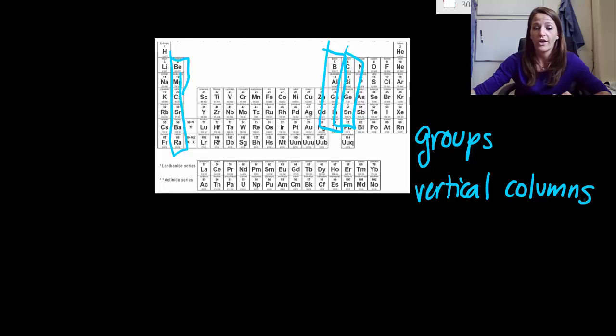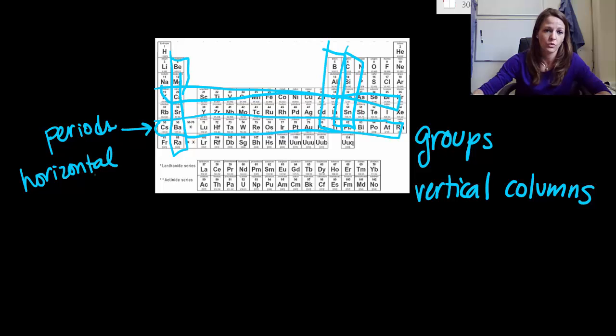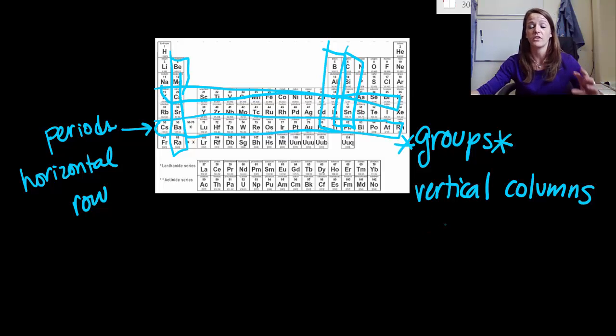Now, we also sometimes talk about a row. So a horizontal row, I cannot draw a straight line. But a horizontal row is typically called, and you'd probably guess this by just knowing the name of this, a period. This is the periodic table. These are called periods. And so that would be a horizontal row. I think it's important that you know the word period, but I think the word group is way, way, way more important. So if you're only going to memorize one thing from this, I would definitely get the word group down. That is super important.